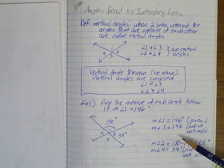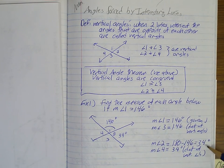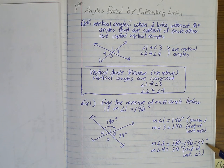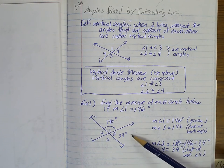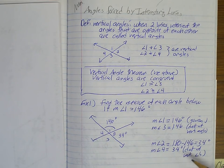And then to get angle 2, I could do 180 minus 146 to give me 34. And so if angle 2 is 34, then angle 4 is also 34, definition of vertical angles.